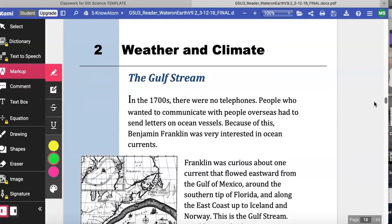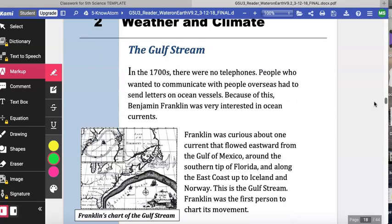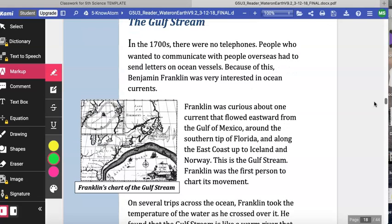Weather and climate. The Gulf Stream. In the 1700s there were no telephones. People who wanted to communicate with people overseas had to send letters on ocean vessels. Because of this, Benjamin Franklin was very interested in ocean currents.